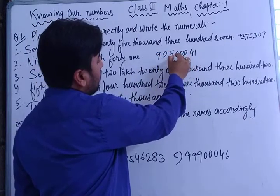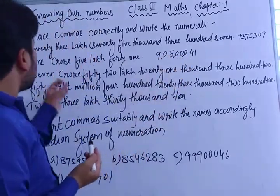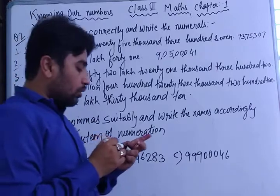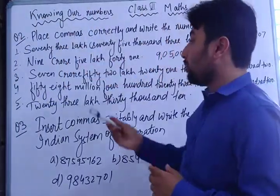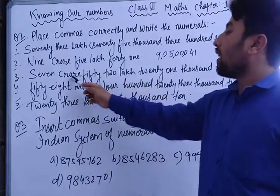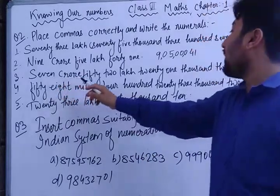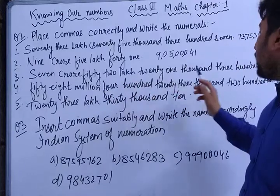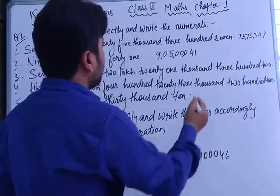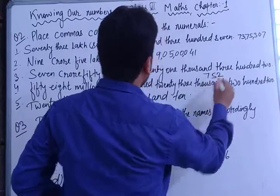After the comma rule — three digits, then two digits, then two digits — we get nine crore five lakh forty. The third part is seven crore fifty-two lakh twenty-one thousand three hundred and two. Since crore and lakh are used, this is clearly in the Indian system. Write seven crore, then fifty-two lakh.